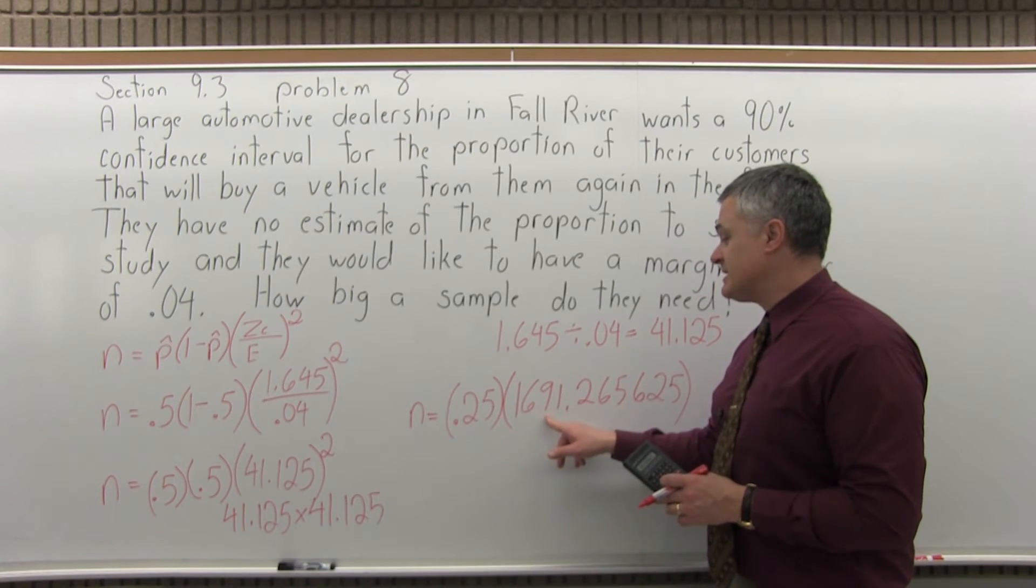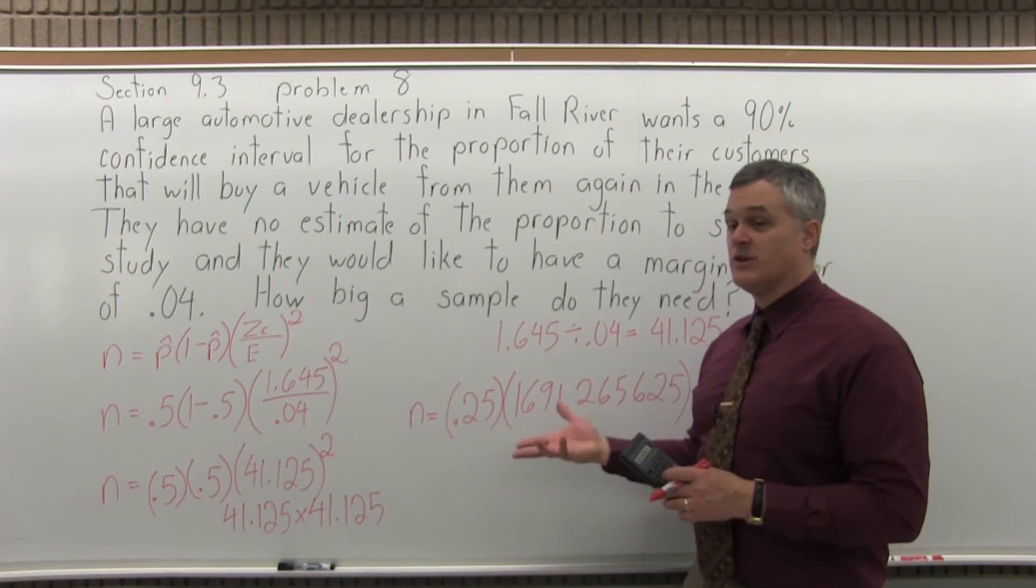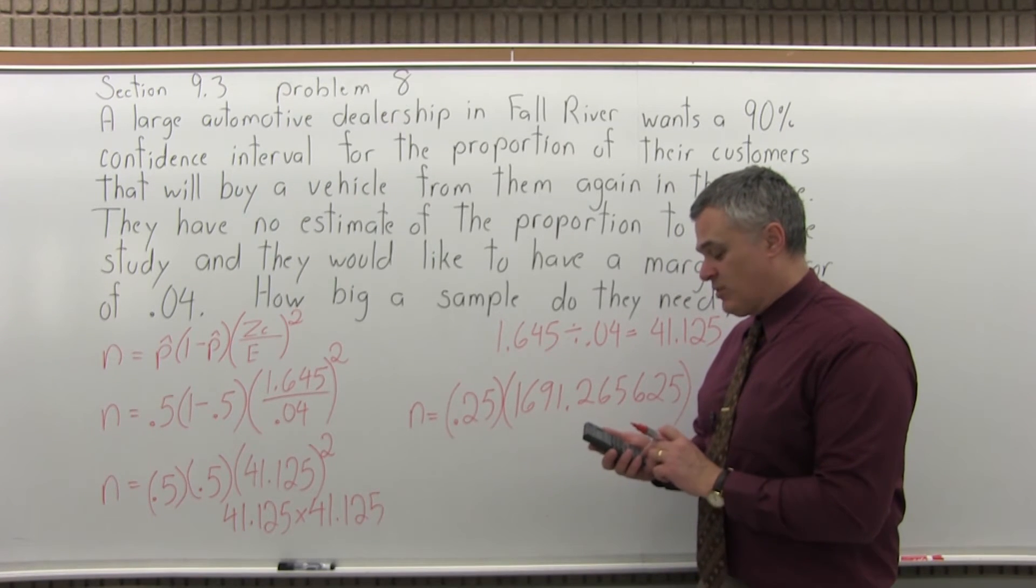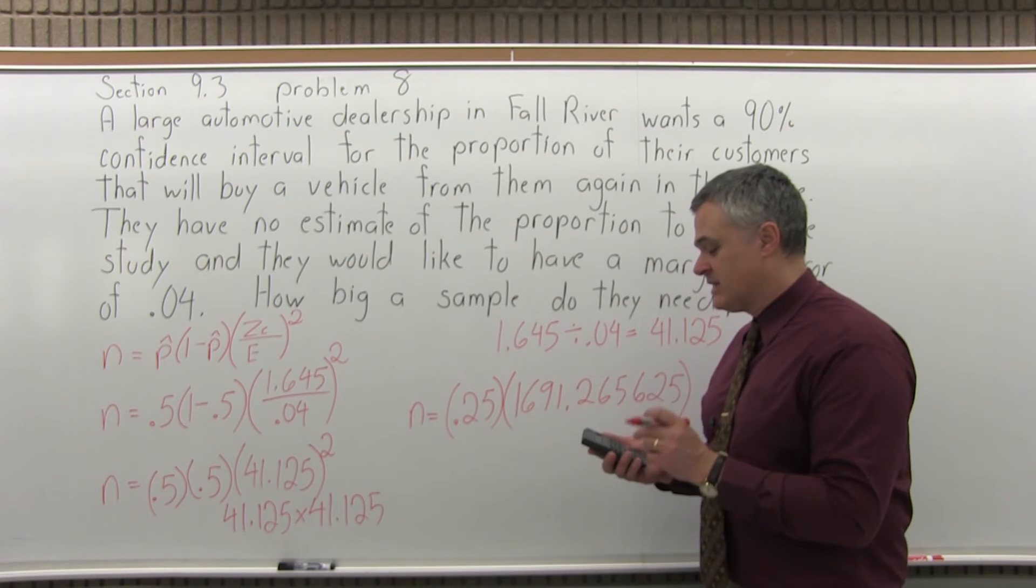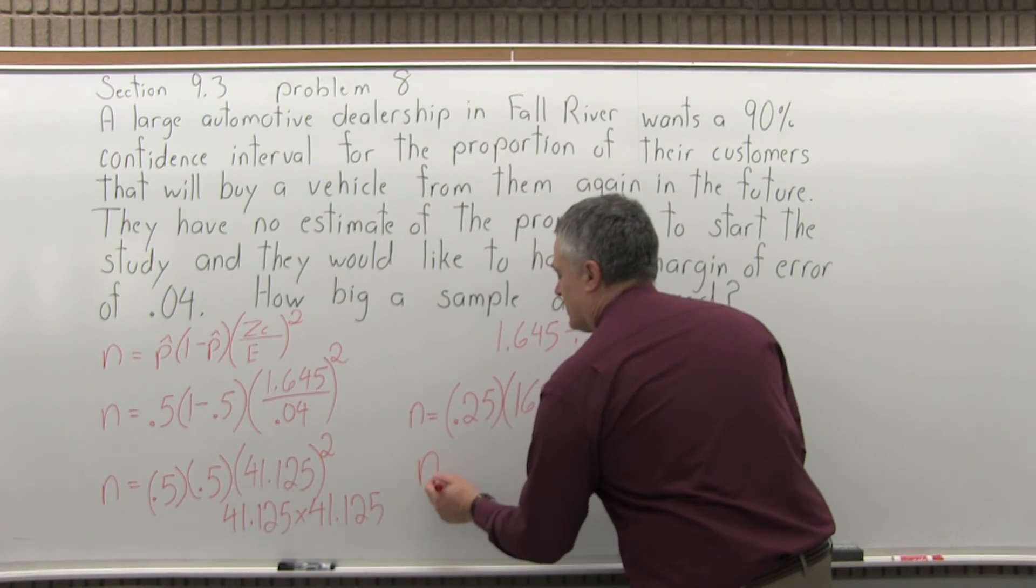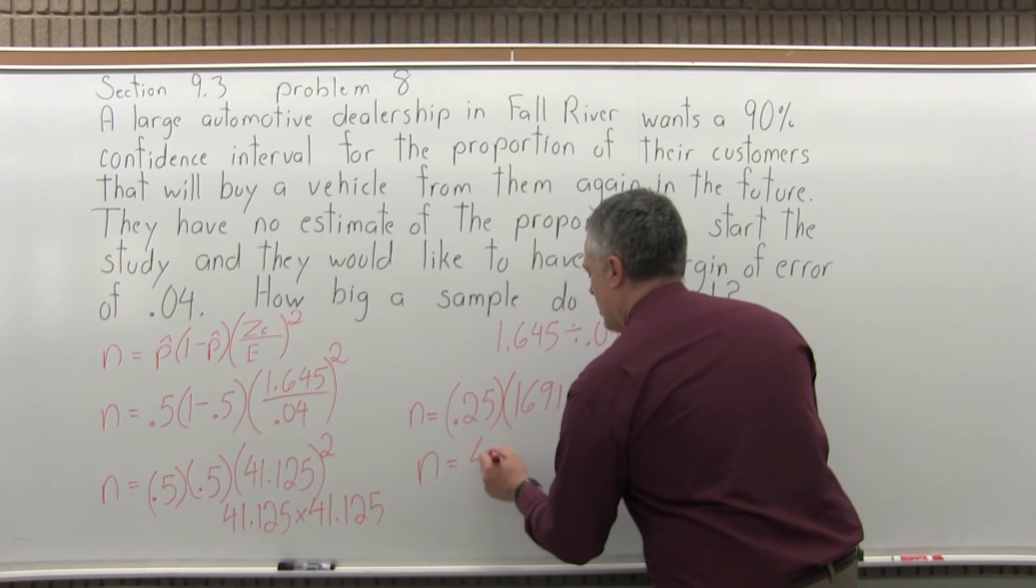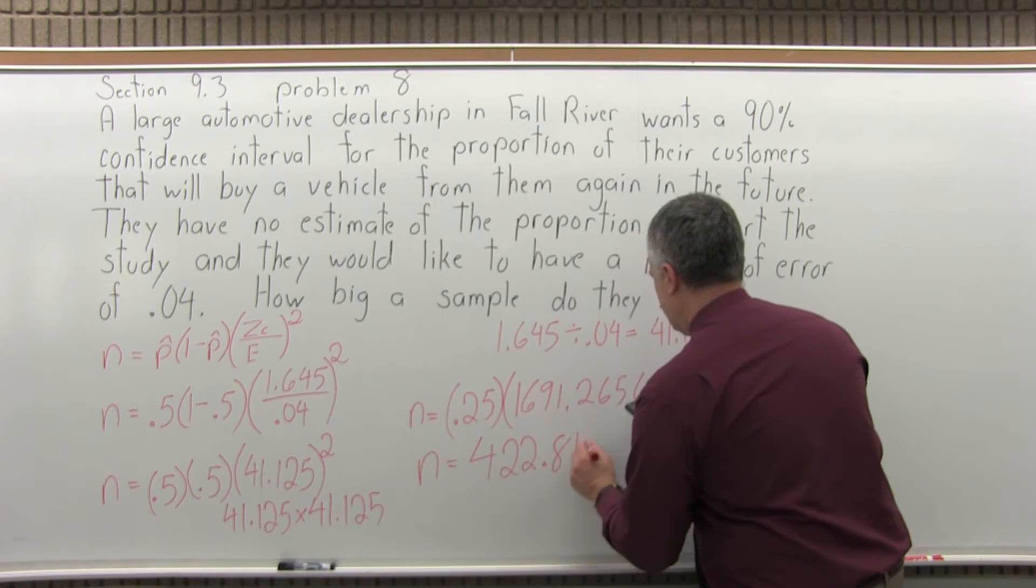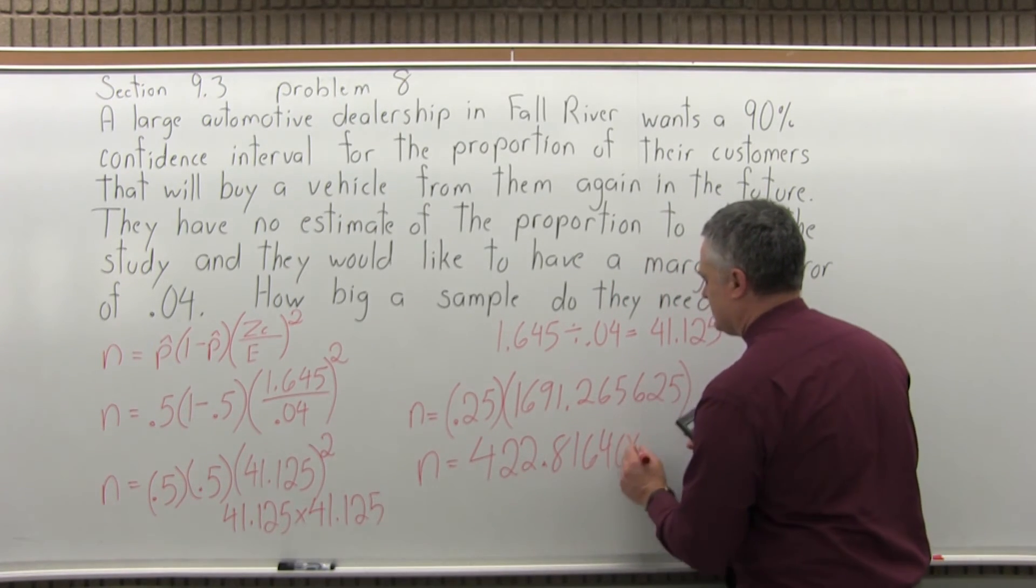So now the result of 1691.265625 gets multiplied times the .25 in front of it. I still have the 1691 point something on the screen of my calculator, so I'll just leave it and say times .25 equals. And the calculator tells me the answer is 422.8164063.